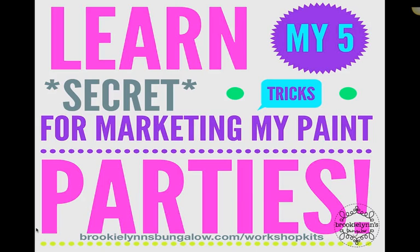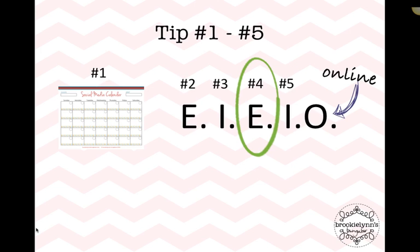Hi everybody, it's Brooke Lynn with tip number four of 'Learn My Five Secret Tricks for Marketing My Paint Party' series. The overview: tip number one was the calendar — the social media calendar that you were emailed automatically when you signed up for the newsletter. Tip number two was E for education. Tip number three was I for information. And tip number four is E for entertainment.